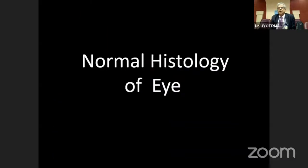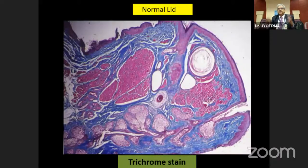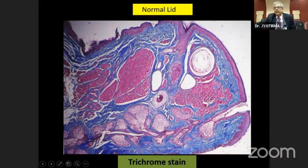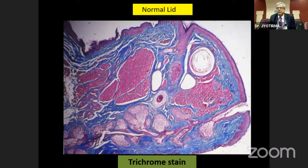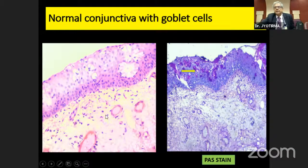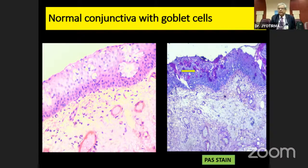What is the normal histology of the eye that ophthalmologists should know? The normal eyelid shows the epidermis and dermis. The dermis contains hair follicles, sebaceous glands, striated muscle, and meibomian glands in a blue background of collagen tissue. The conjunctiva shows stratified columnar epithelium with goblet cells stained pink with PAS stain.